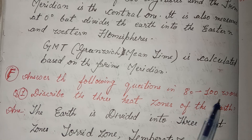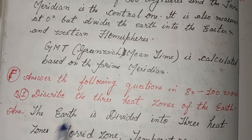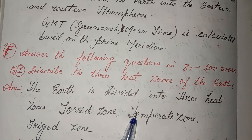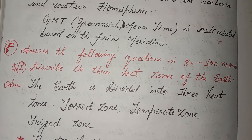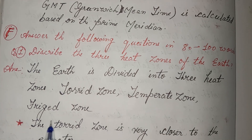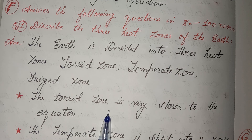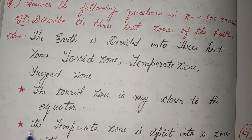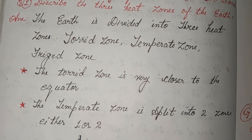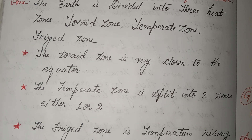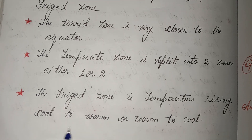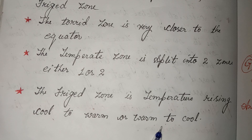Answer the following question in 80 to 100 words. First: describe the three heat zones of the earth. The earth is divided into three heat zones: the torrid zone, the temperate zone, and the frigid zone. The torrid zone is very close to the equator. The temperate zone is split into two zones — one in each hemisphere. The frigid zone has temperatures ranging from cool to cold.